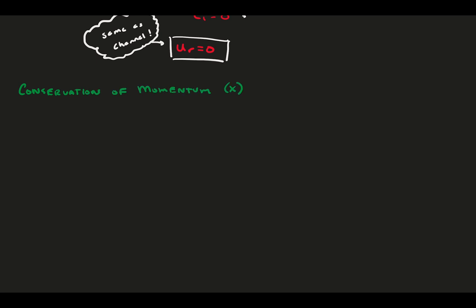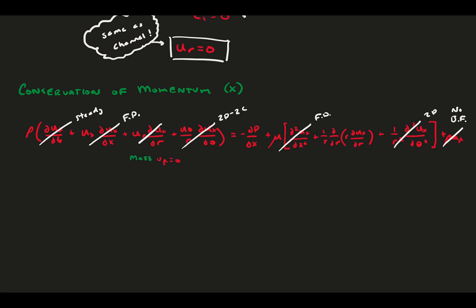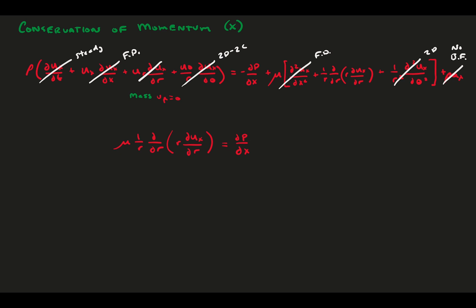Next, onto the conservation of momentum in the streamwise direction. Let's write it all out this one time for practice. Most of the terms go away due to our assumptions: steady, fully developed, 2D and 2C, and no body force. Also, we can remove a term because we just learned that the conservation of mass means u_r is zero. We come to an expression with the viscous term on the left and the pressure gradient on the right. As with channel flow, pressure-driven pipe flow is a balance of viscous and pressure forces.